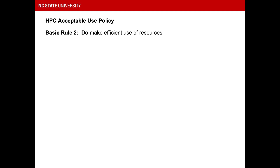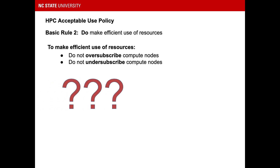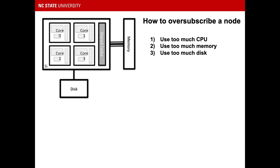The second basic rule of the Acceptable Use Policy is to use resources efficiently. To make efficient use of resources, do not oversubscribe a node and do not undersubscribe a node. What does that mean? Let's take a closer look at a node. A node has compute power in the form of CPUs or cores. It has a pool of memory that is shared by all the cores on the node, and it also has a small amount of disk space.